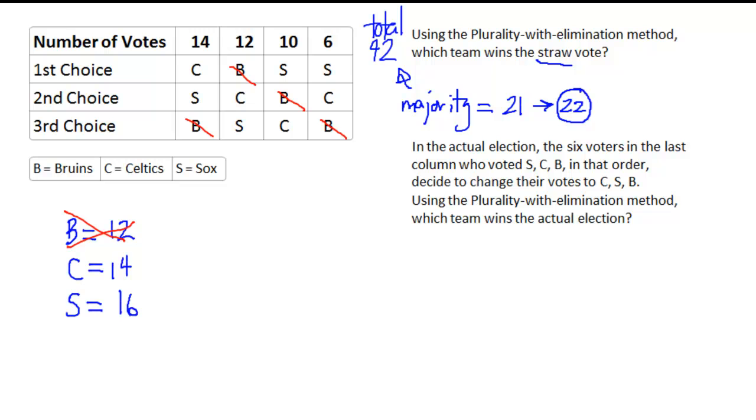You can see that with the Bruins eliminated, the Celtics have the most first place votes. This column of 14, as well as this column of 12, belongs to the Celtics, and the Sox only get 16 first place votes. So in this case, the Celtics is going to be the winner.